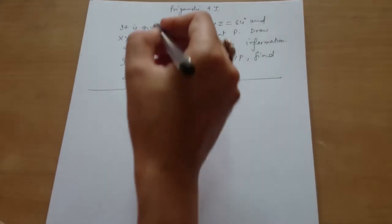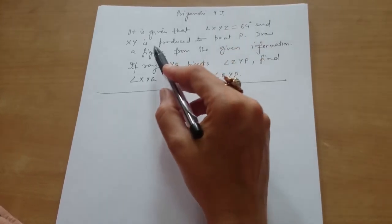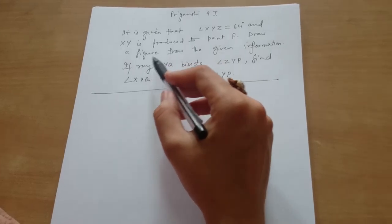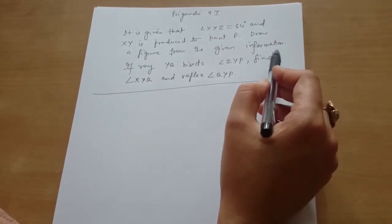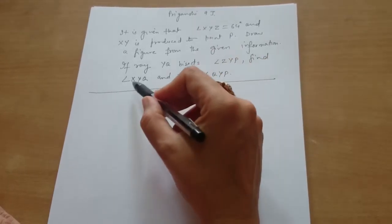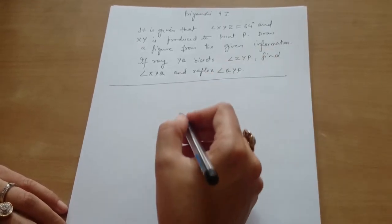Priyanshi, question for you is: it is given that angle XYZ is 64 degrees and XY is produced to point P. You have to draw a figure from the given information first, and if ray YQ bisects angle ZYP, find angle XYQ and reflex angle QYP. Tell me how you will do.